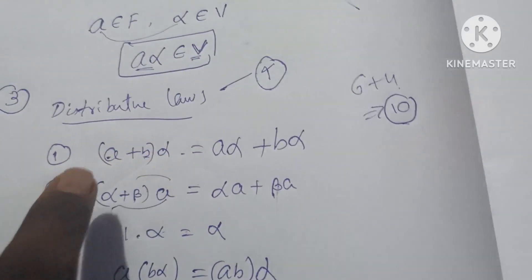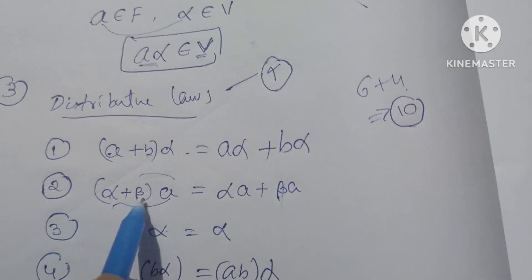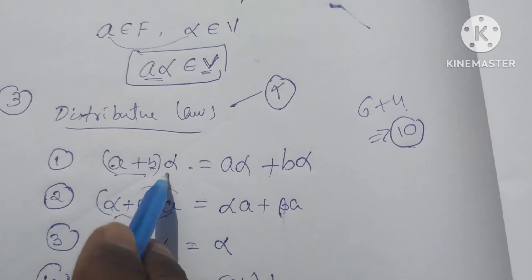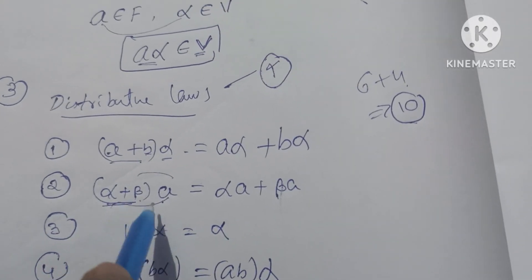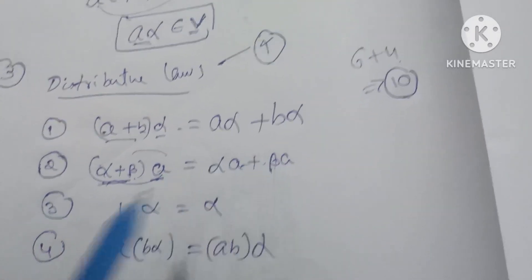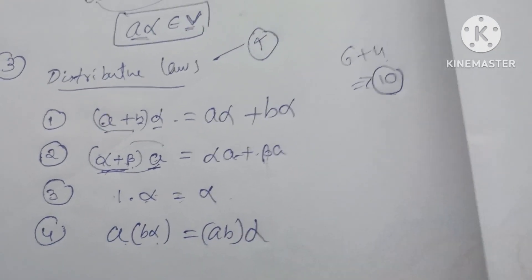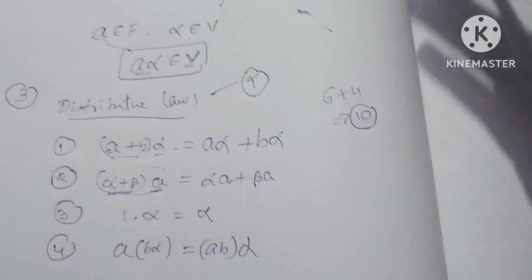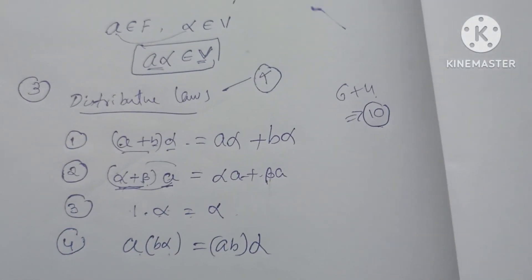The distributive law conditions are: a plus b into alpha equals a alpha plus b alpha; alpha plus beta into a equals alpha a plus beta a; 1 into alpha equals alpha; and a into b alpha equals ab into alpha. If you prove all these conditions, it will be a vector space.